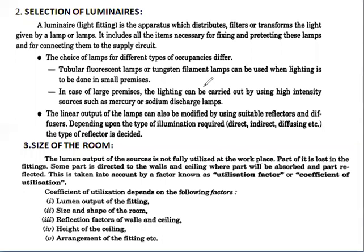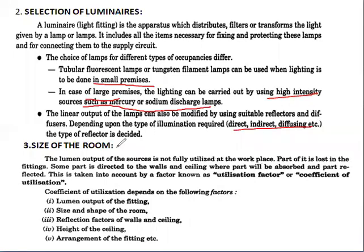The choice of lamps differs for different types of occupancies. Tubular fluorescent lamps or tungsten lamps can be used when lighting is to be done in small premises. For large premises, lighting can be carried out using high-intensity sources such as mercury or sodium discharge lamps. The luminous output of the lamps can also be modified by using suitable reflectors and diffusers depending upon the type of illumination required — whether direct, indirect, diffusing, semi-indirect, or semi-direct.